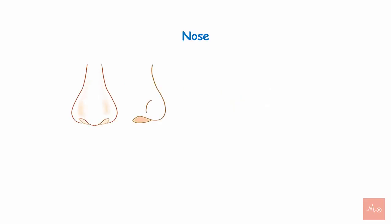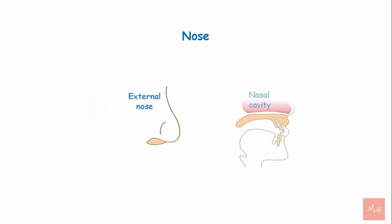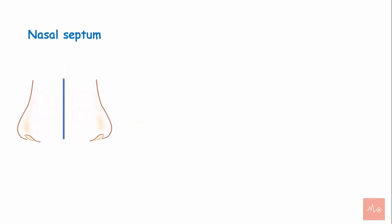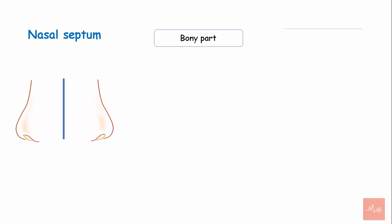The nasal septum. The nose is an important organ of the face that performs major functions of respiration, olfaction, and provides aesthetics to the face. The nose can be divided into two main parts: the external nose and the nasal cavity. The nasal cavity is divided into halves by a flat midline structure called the nasal septum, which forms the middle wall of the nasal cavity.